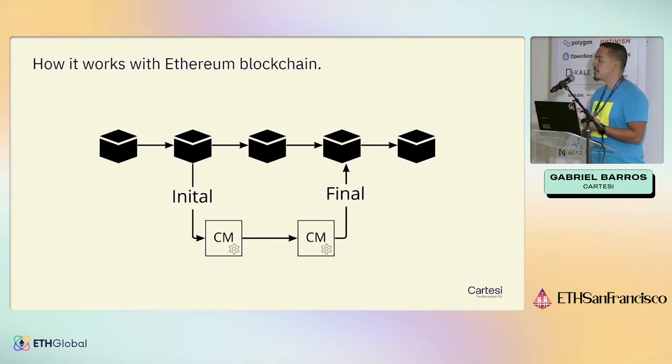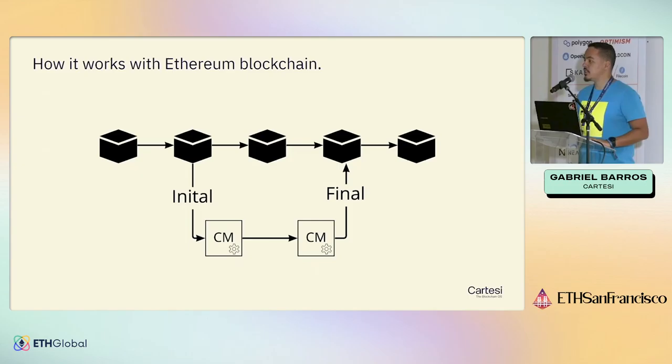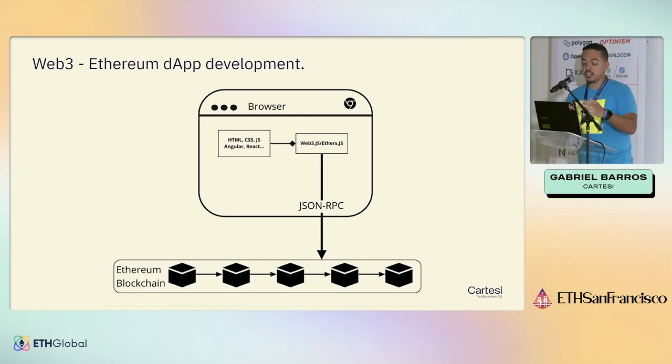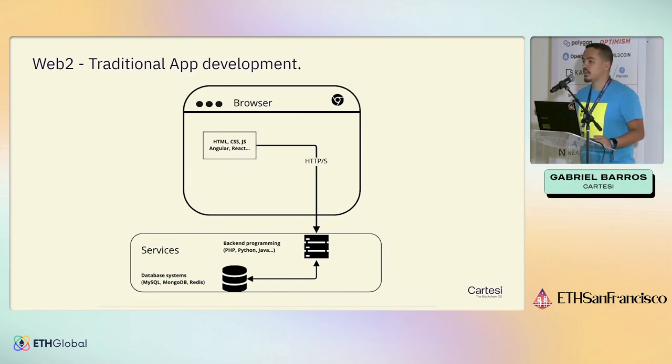For seven days you go on doing things off-chain. When the time is up, you go back to the main chain and say 'after all that happened, this is the new state of the machine.' People have the chance to verify whether you're telling the truth. If they disagree they can go back and do the dispute. However, if they agree, after seven days everything is settled — all that computation does not need to happen again on-chain. That's why optimistic rollups expand the main chain.